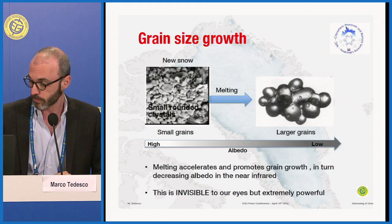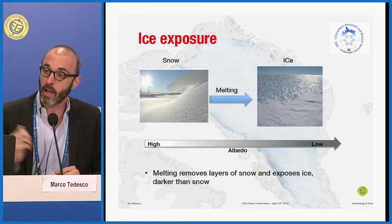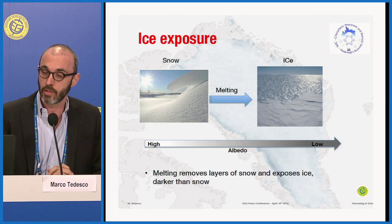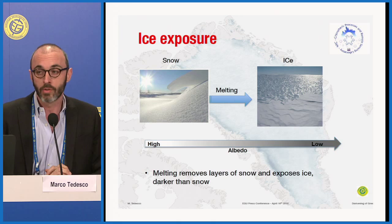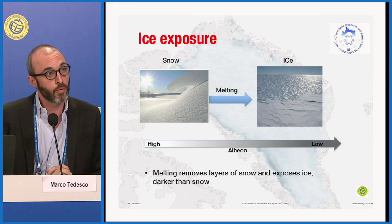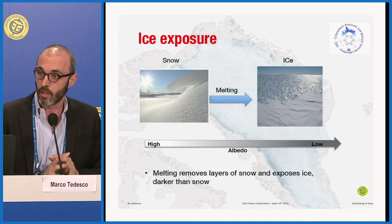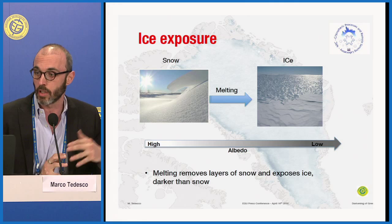The second hypothesis is the exposure of bare ice. Snow is bright again, but ice is much darker. As you melt more and more snow deposited every year, because of increased melting, you expose more bare ice. New snow has about 80% albedo; bare ice is about 30 to 40% albedo depending on the kind of ice. So you really reduce albedo a lot. Again, in this case, excessive melting is creating an increased reduction in albedo because of exposure of bare ice.